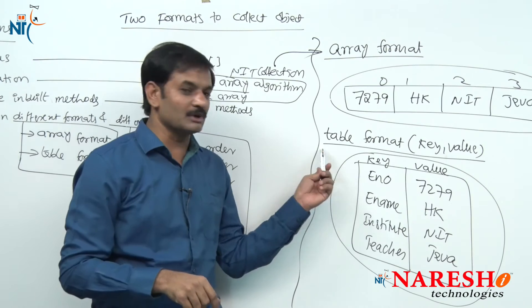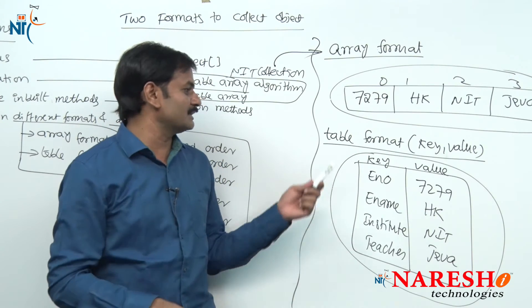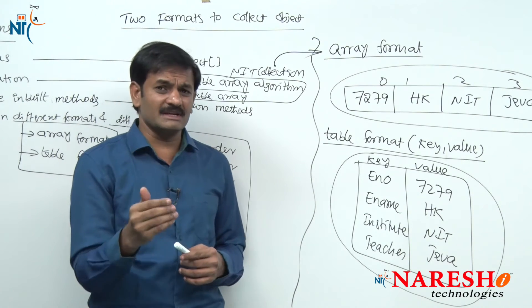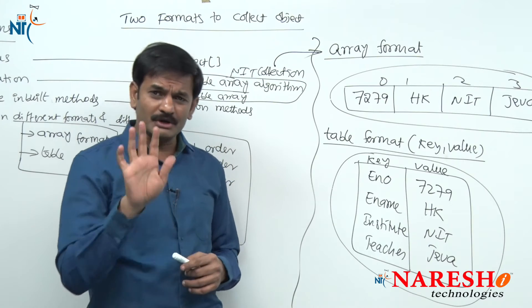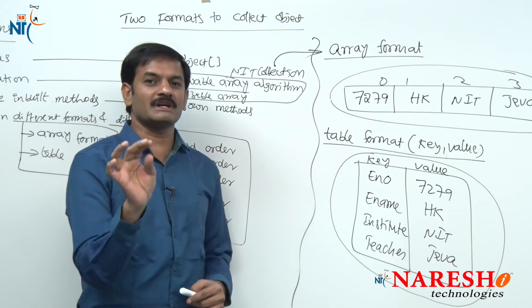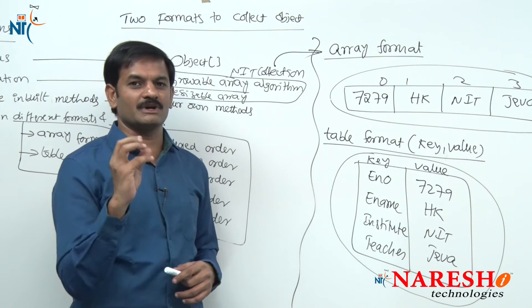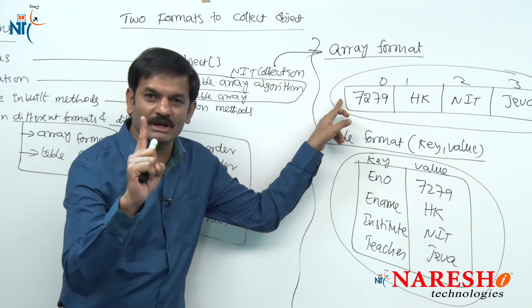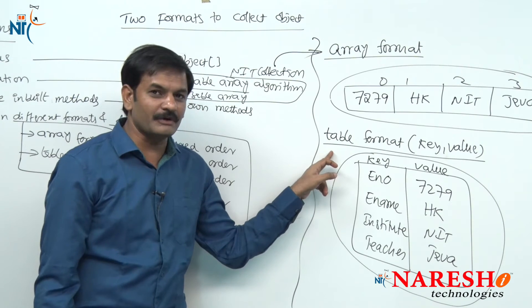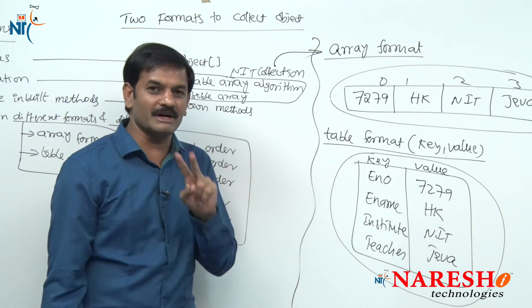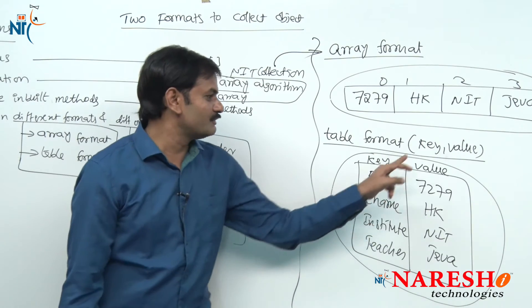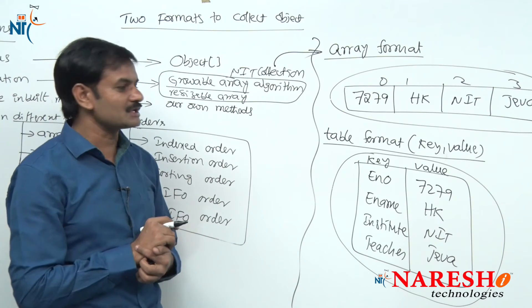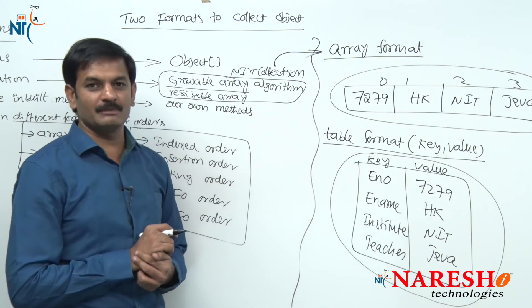If you want to also support table format, it is your responsibility to develop a new class — but no need to develop it from scratch. Just understand the idea. For array format you need one array; for table format you need two arrays — one for keys and one for values. I'll give you an idea of the changes needed.